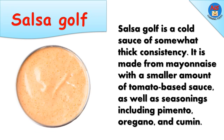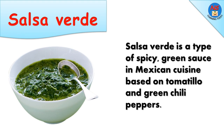Salsa golf is a cold sauce of somewhat thick consistency, made from mayonnaise with a smaller amount of tomato-based sauce, as well as seasonings including pimento, oregano, and cumin. Salsa verde is a type of spicy green sauce in Mexican cuisine, based on tomatillo and green chili peppers.